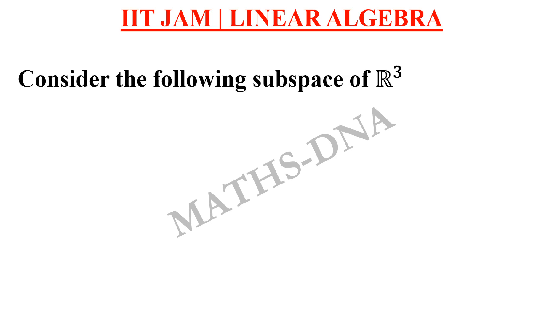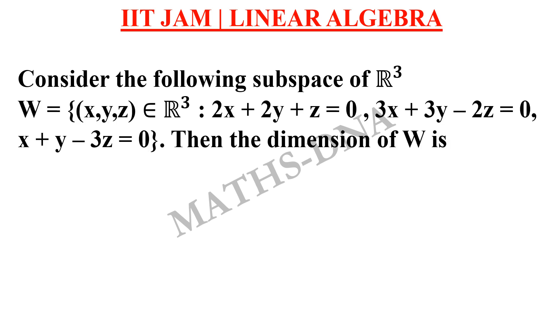The question is, consider the following subspace of R³ W defined as (x, y, z) belongs to R³ with 2x + 2y + z = 0, 3x + 3y - 2z = 0, and x + y - 3z = 0. Then the dimension of W is,